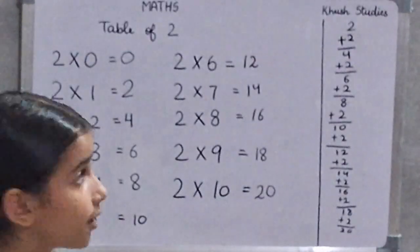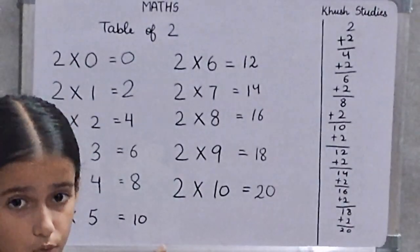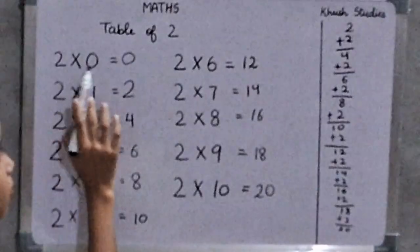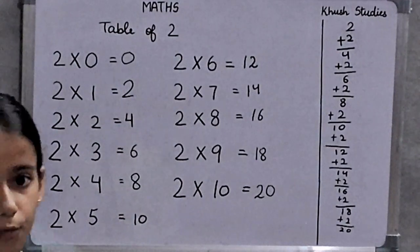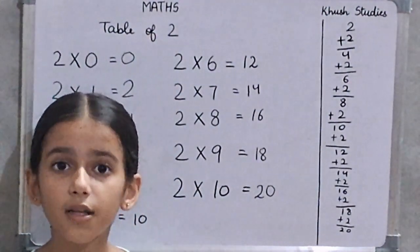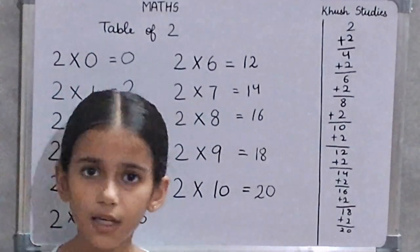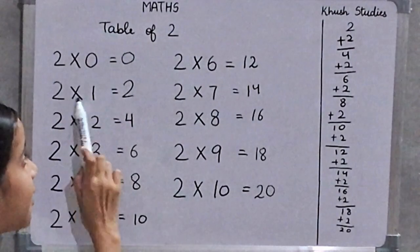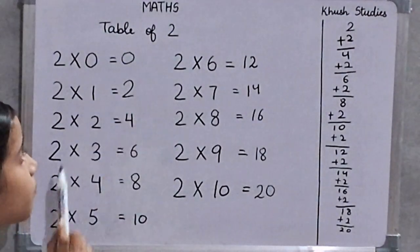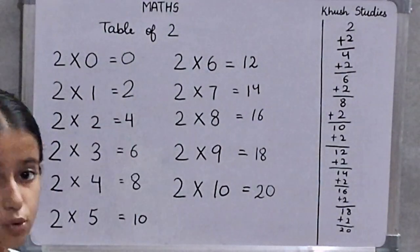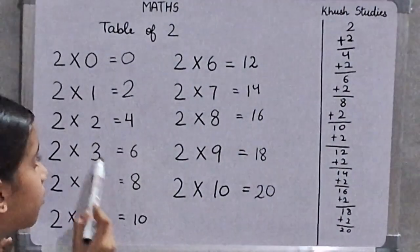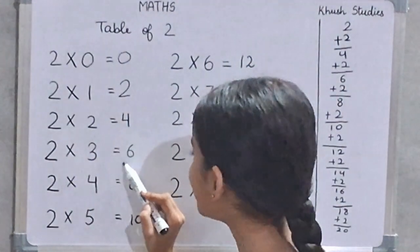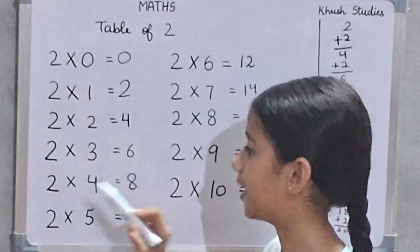I hope you understand the table of 2. Now, we will learn the table of 2. 2 times 0 is 0. When we multiply a number with 0, the answer is always 0. 2 times 1 is 2. 2 times 2 is 4. 2 times 3 is 6.